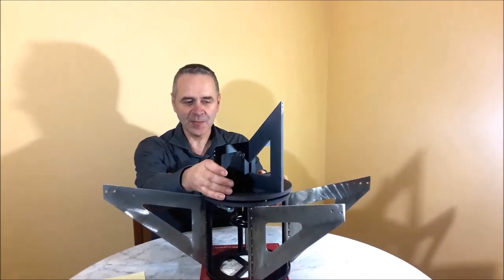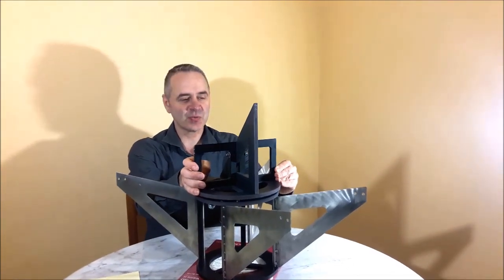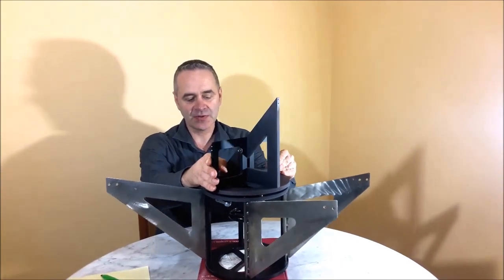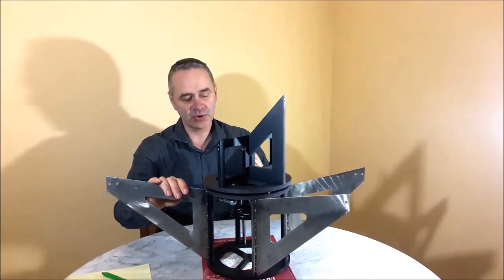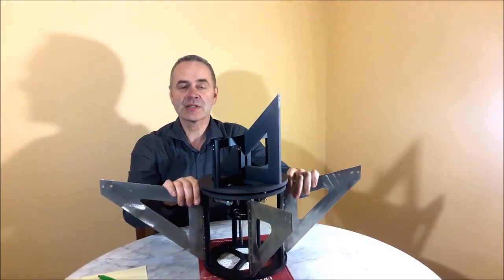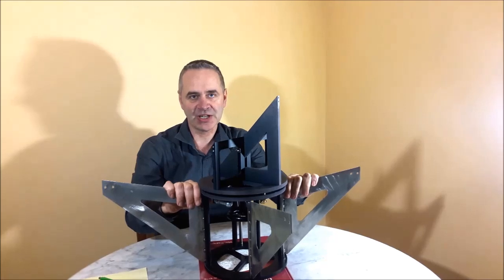Hi guys, what you see here is the secondary mirror support for a 65cm Newtonian telescope that will be mounted in a full carbon tube. The structure was designed and manufactured by Gemini.